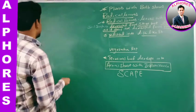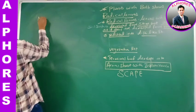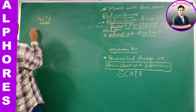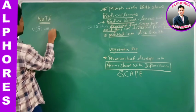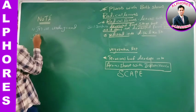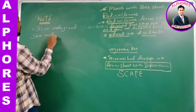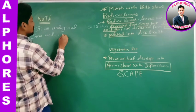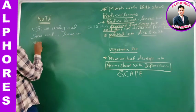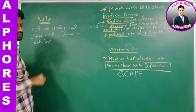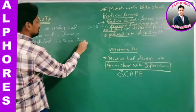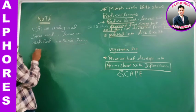Some important statements concerning underground stem modifications: In all underground stem modifications — rhizome, corm, stem tuber, and bulb — leaves are modified into scale leaves. This is leaf modification seen in all four underground stem modifications.